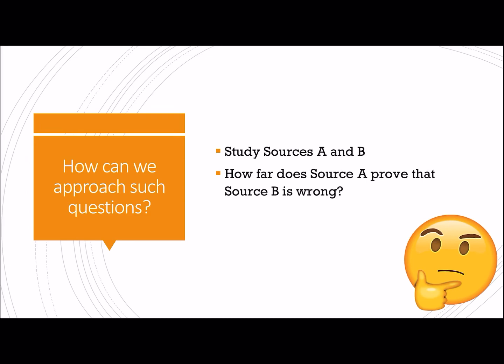So our first question: study sources A and B, how far does source A prove that source B is wrong? If you want to rephrase this to make it a bit easier for you to understand, essentially this question is asking you, can source A be used to prove that source B is wrong?